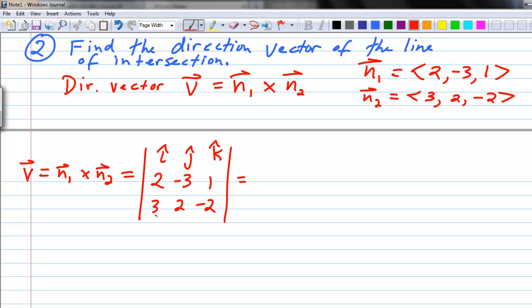From that, cross out the first column in the first row and use this little 2 by 2 to find that the coefficient of i will be negative 3 times negative 2, which is 6, minus 2 times 1, minus 2, i. Minus - remember that we alternate signs here - cross off the middle column and the first row. We end up with 2 times negative 2, or negative 4, minus 3 times 1, or 3, j.